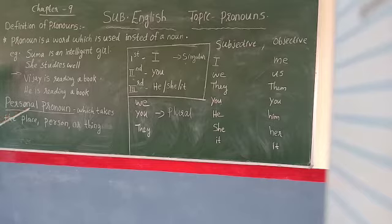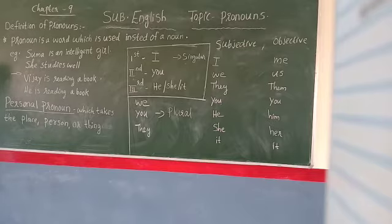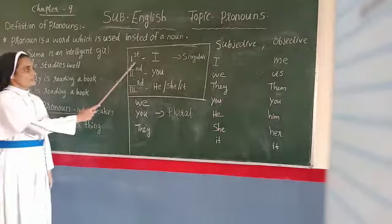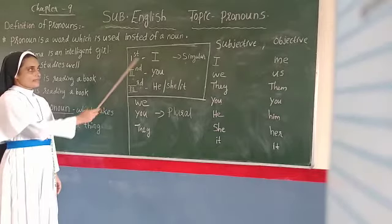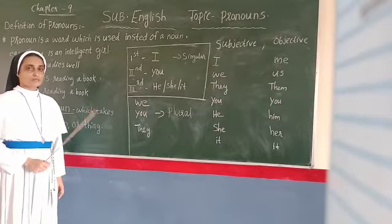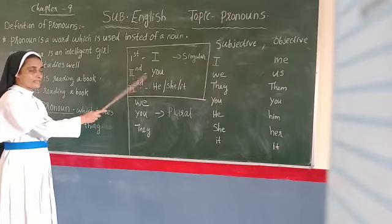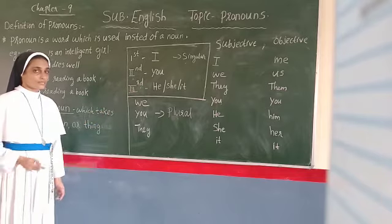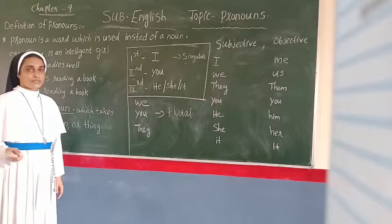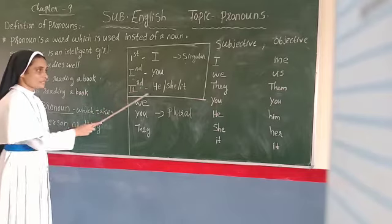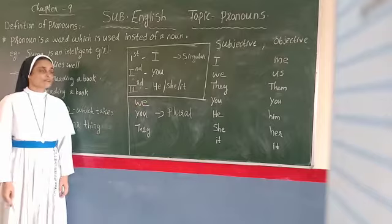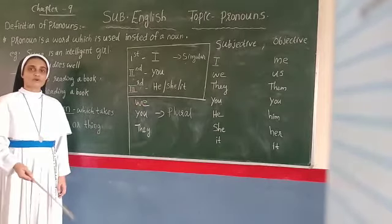Now you will see personal pronouns. Personal pronouns take the place of a person. The first person singular is 'I' — the one who is speaking. Now I am speaking to you. The second person is 'you' — the listener, who is listening to me. The third person is 'he' or 'she' — the one being spoken about.